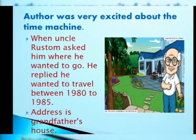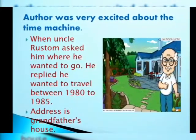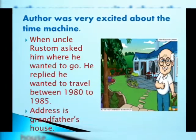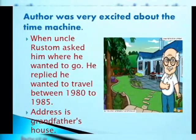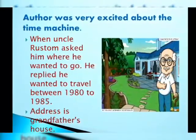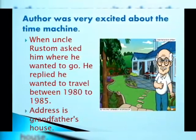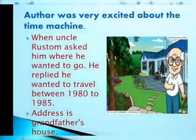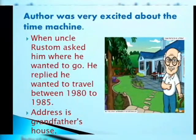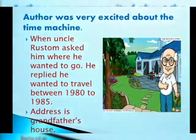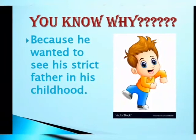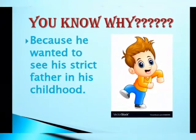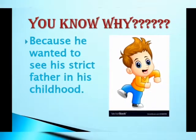The author was very excited about the time machine. When Uncle Rustam told him about it, he was very excited. On asking where he wanted to go, he replied that he wanted to travel between 1980 to 1985, and the address should be his grandfather's house. The question arises — why did he want to go between those years? Because he wanted to see his strict father in his childhood.